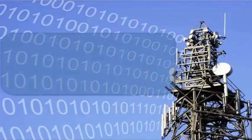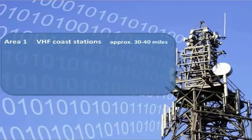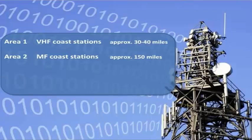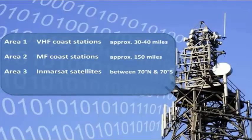Area 1 is within range of VHF radio coast stations. Area 2 is within range of MF medium-frequency radio coast stations. Area 3 is between 70 degrees north and 70 degrees south, and covered by the InMarsat satellite communication system.